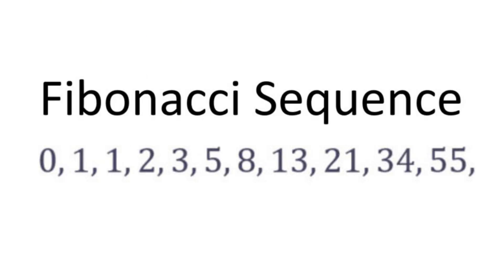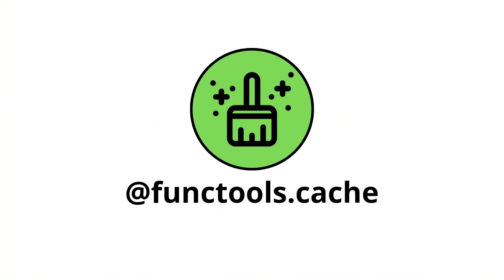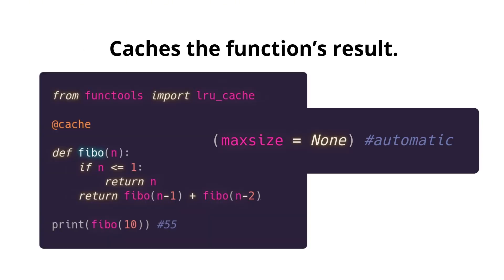Here you have the three last ones within the first ten. Similarly we have @functools.cache, which is basically the same thing but the max_size parameter is automatically set to None, so we don't have to pass any parameter — every result of the function is already cached.